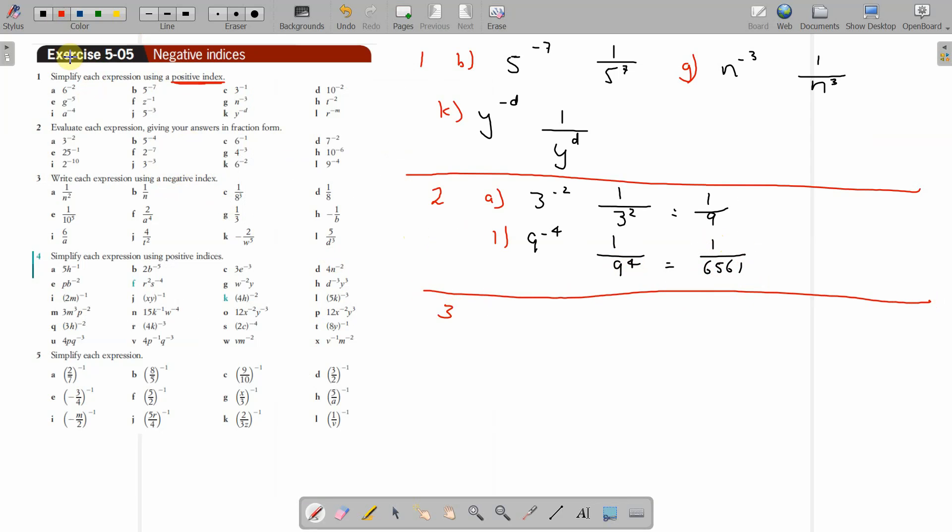Okay, that's question 2. So you put it in the reciprocal, then you find out what that indice equals. Question 3, this time we're going for the negative index, so the reverse of what happens in question 1. Let's go 3a, 3f, and 3k.